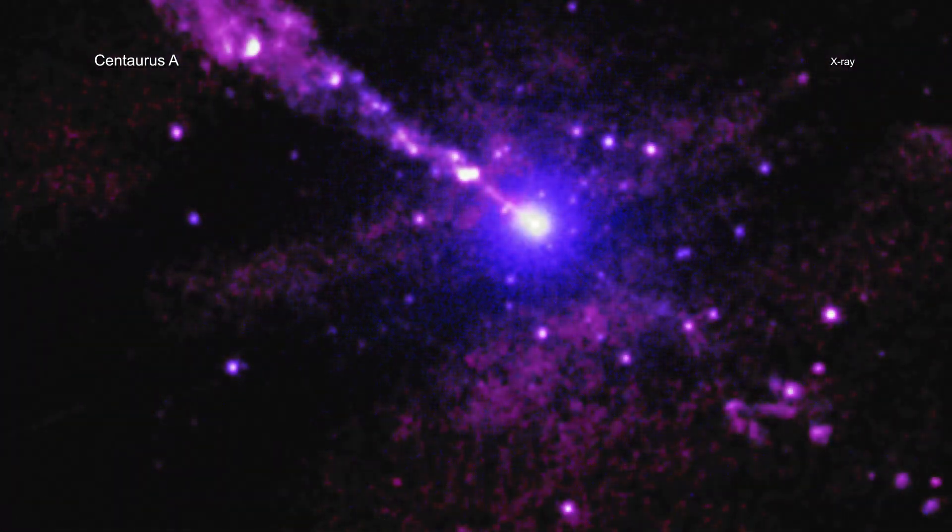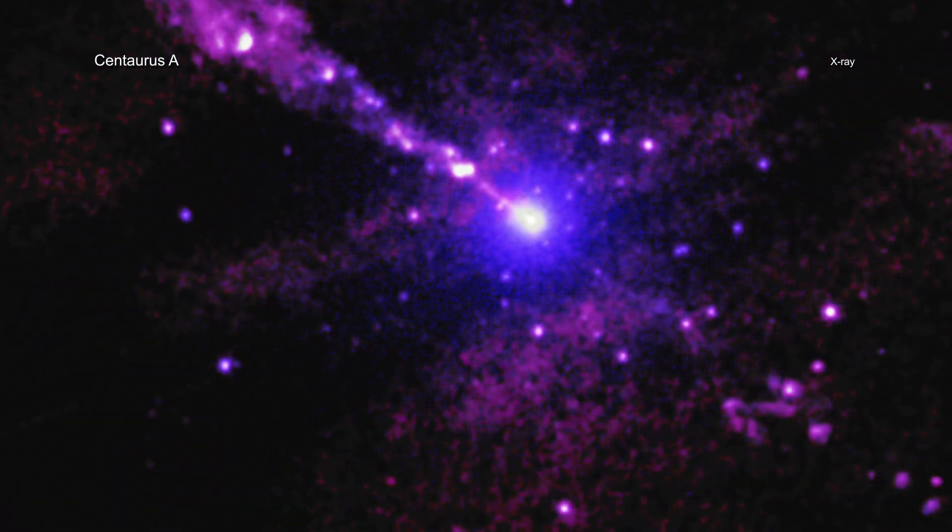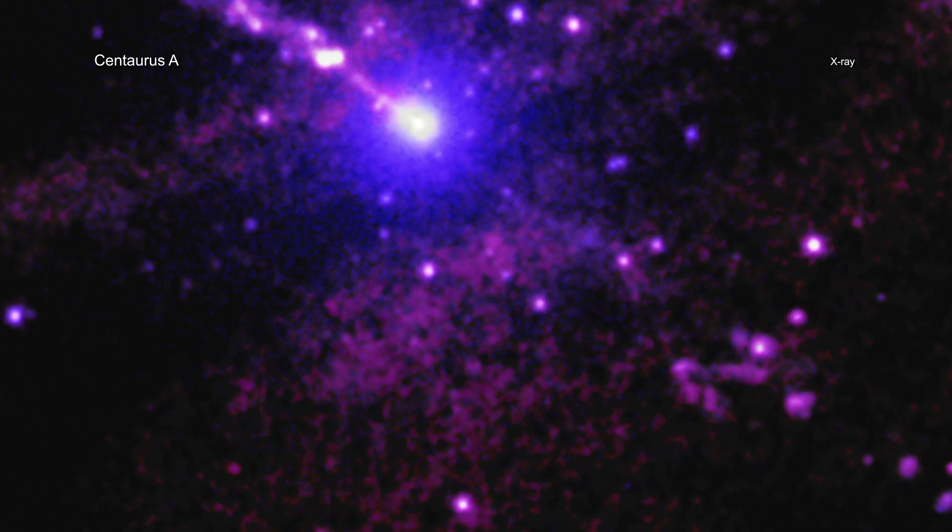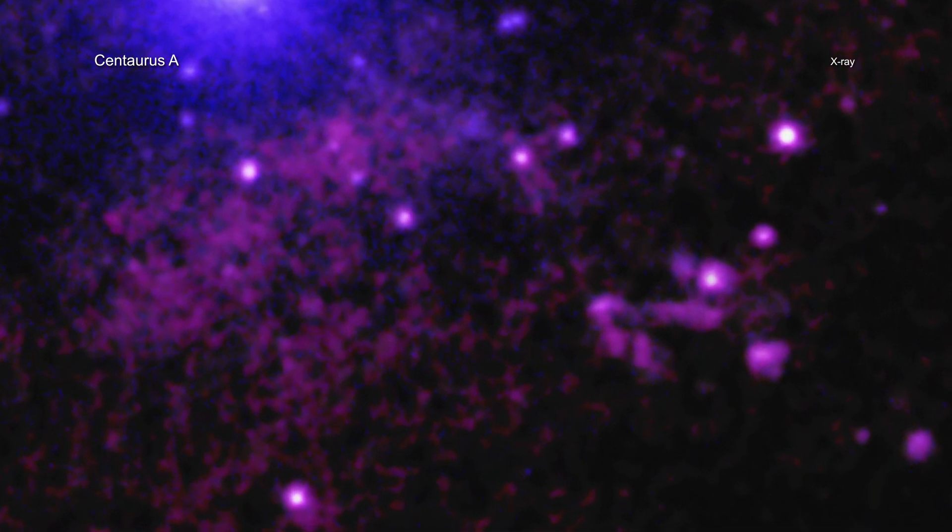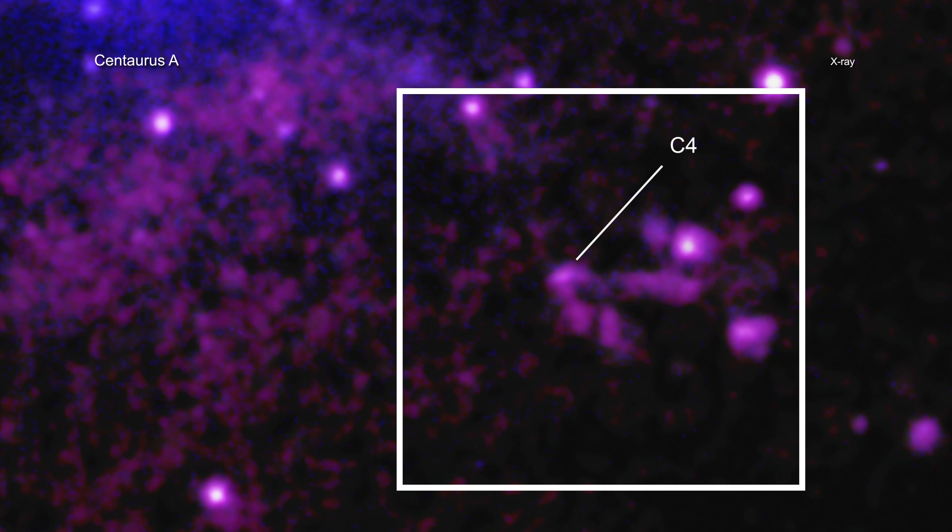Using NASA's Chandra X-ray Observatory, astronomers have found an unusual mark from a giant black hole's powerful jet striking an unidentified object in its path.